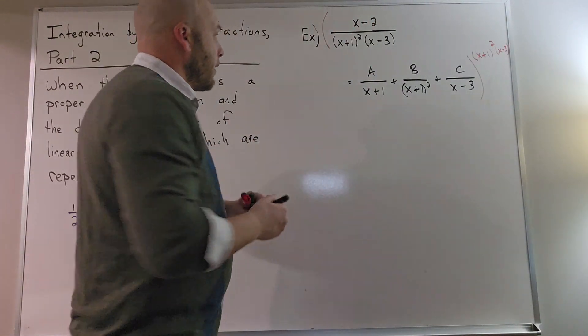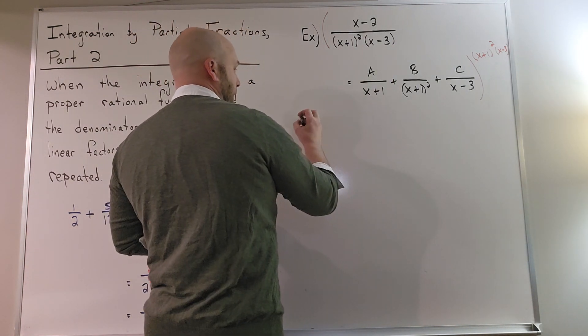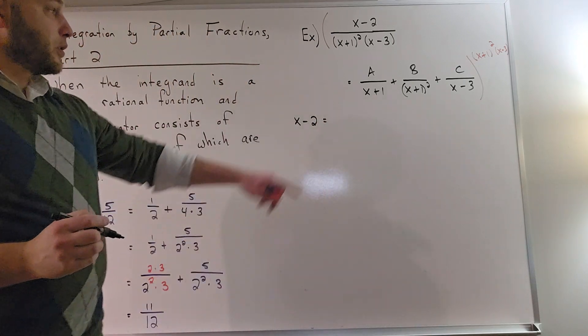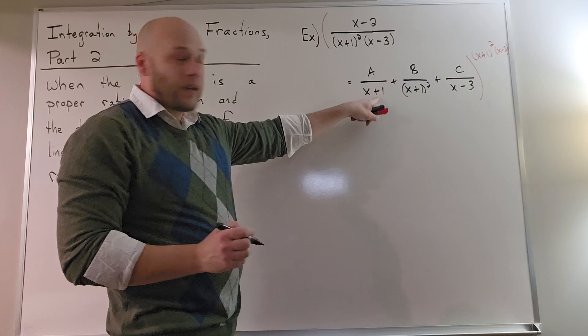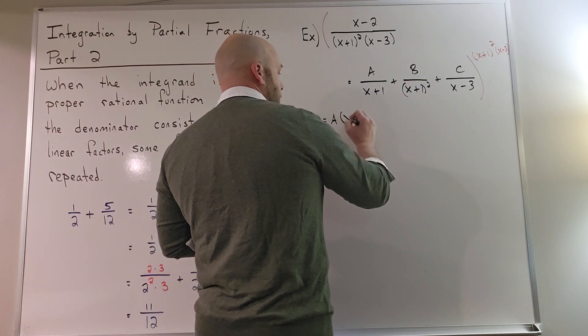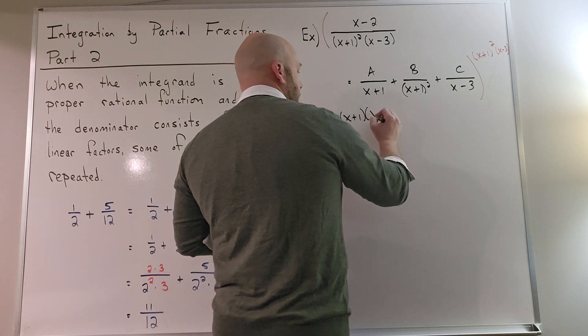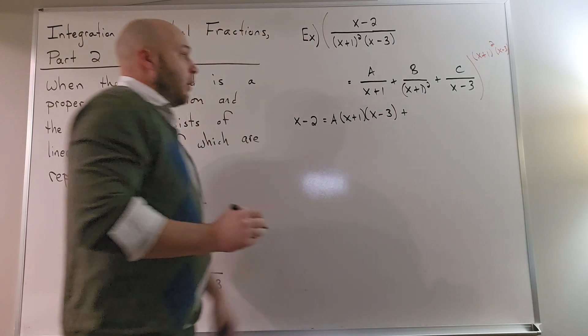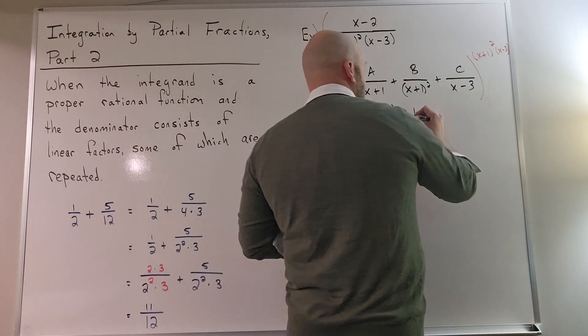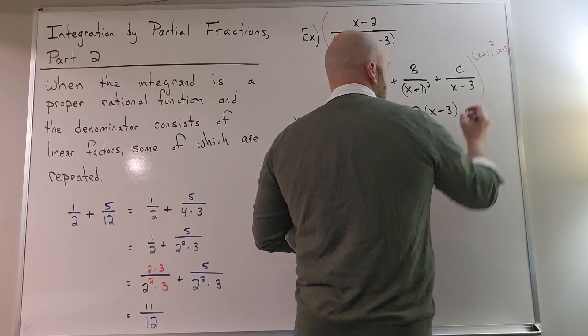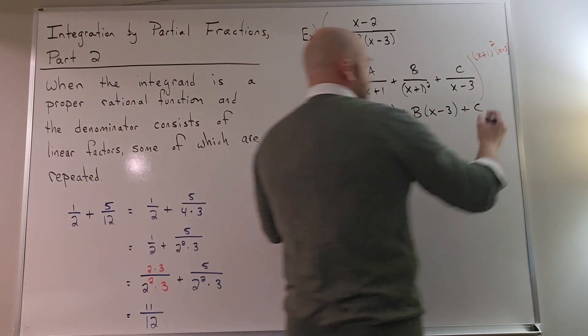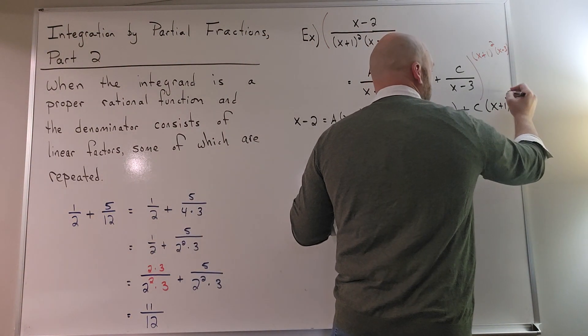All right, so I go ahead and I distribute that. Of course on the left hand side, the denominator cancels, giving me x minus 2. On the other side, when I distribute to the a term, I get one factor of x plus 1 will cancel, giving me a times x plus 1 times x minus 3. When I multiply by the b term, the x plus 1 squared will cancel, giving me b times x minus 3. And then when I multiply by the c term, the x minus 3 cancels, giving c times x plus 1 squared.